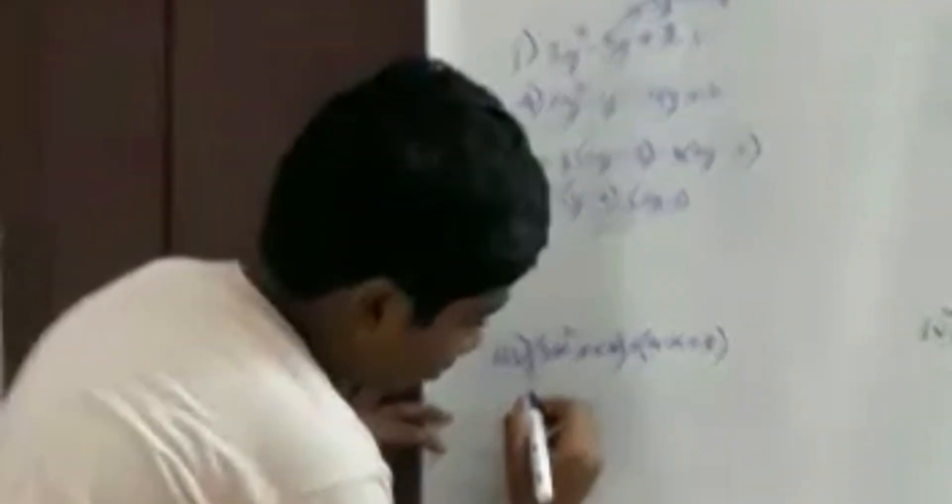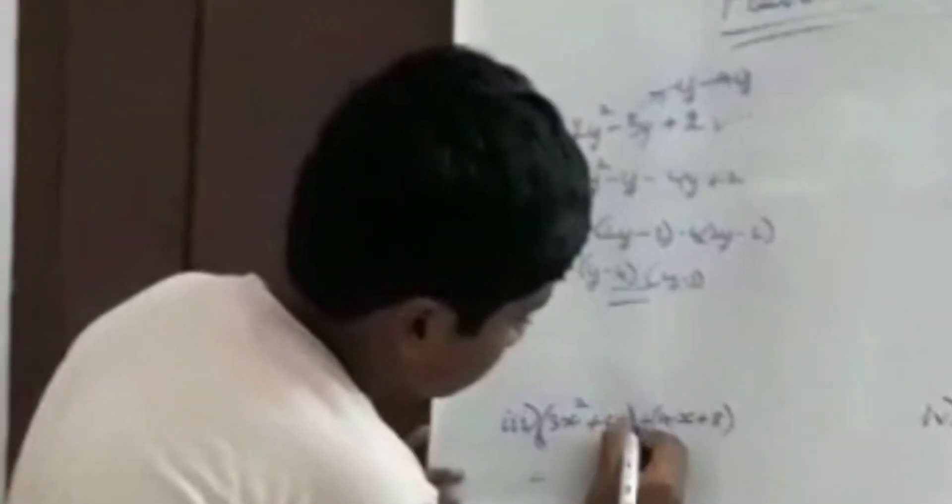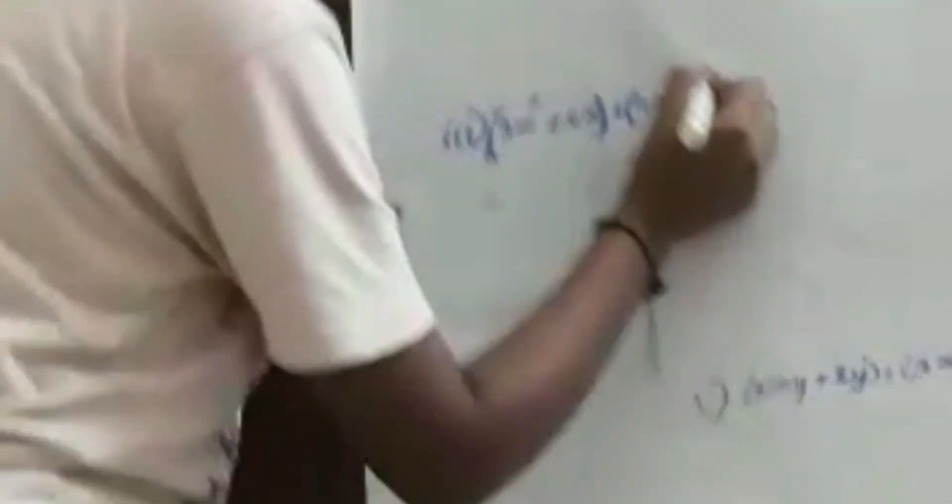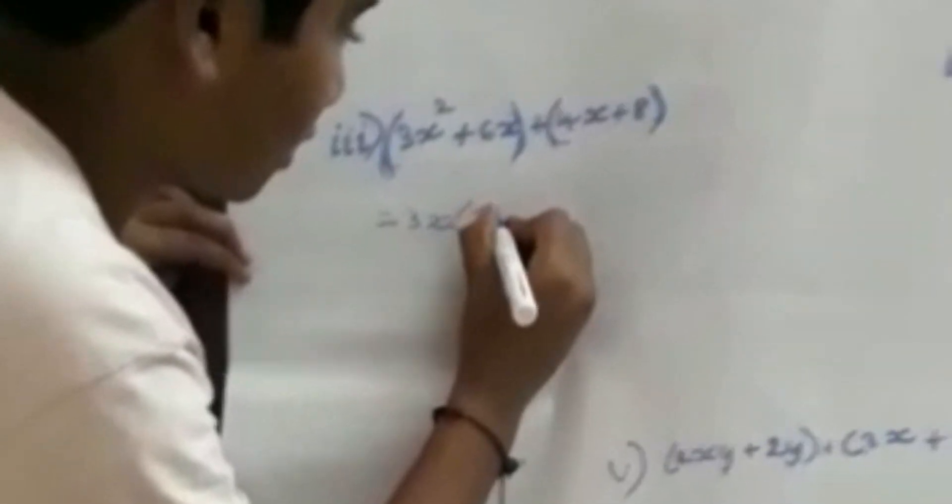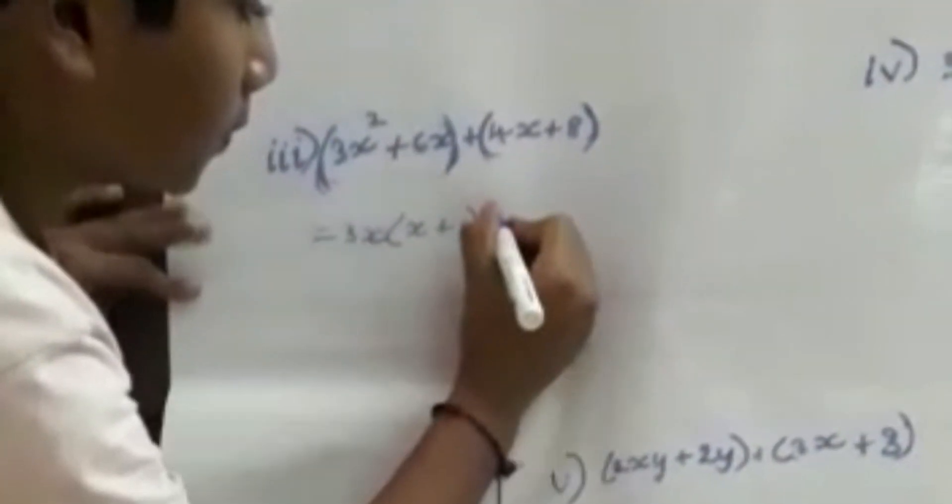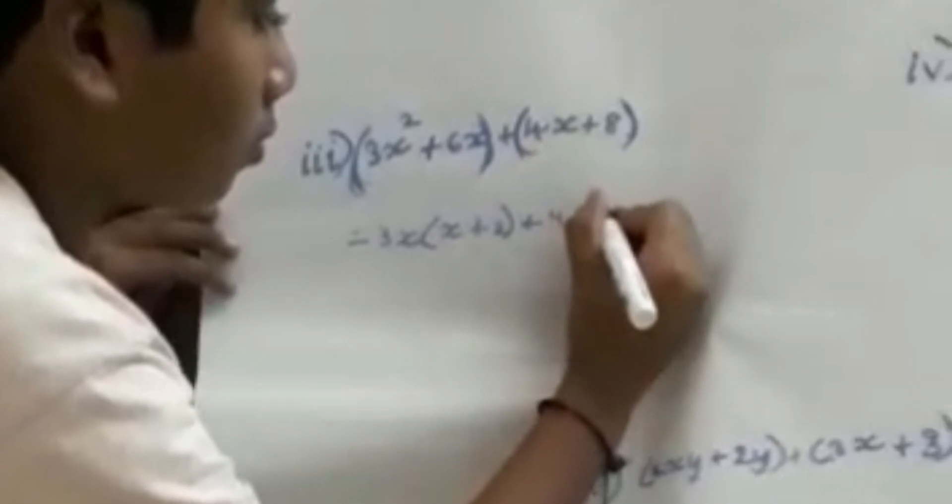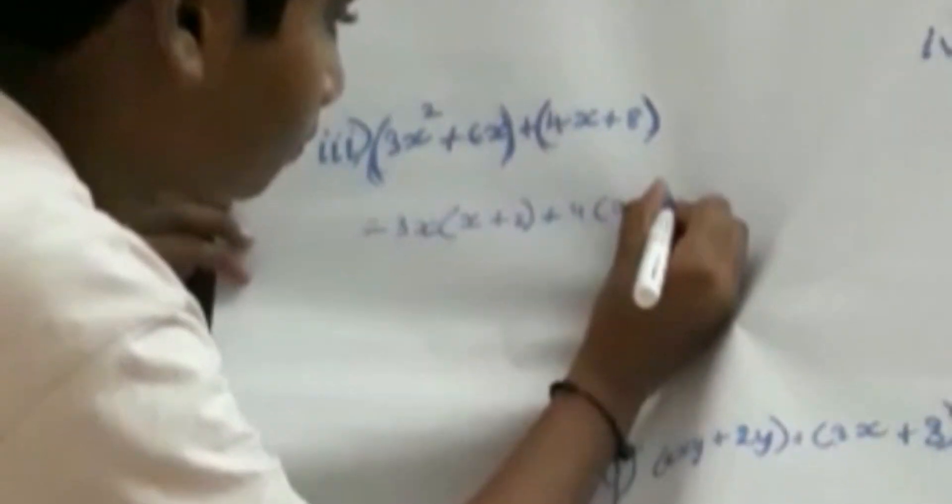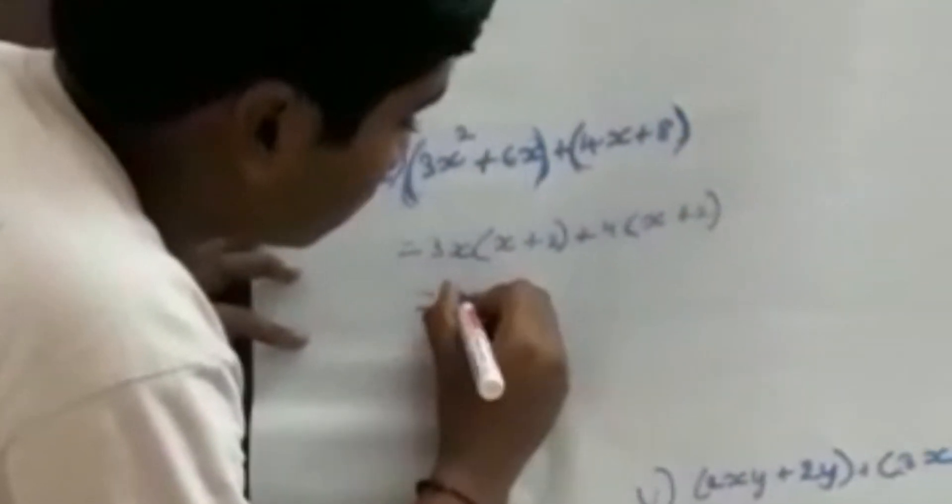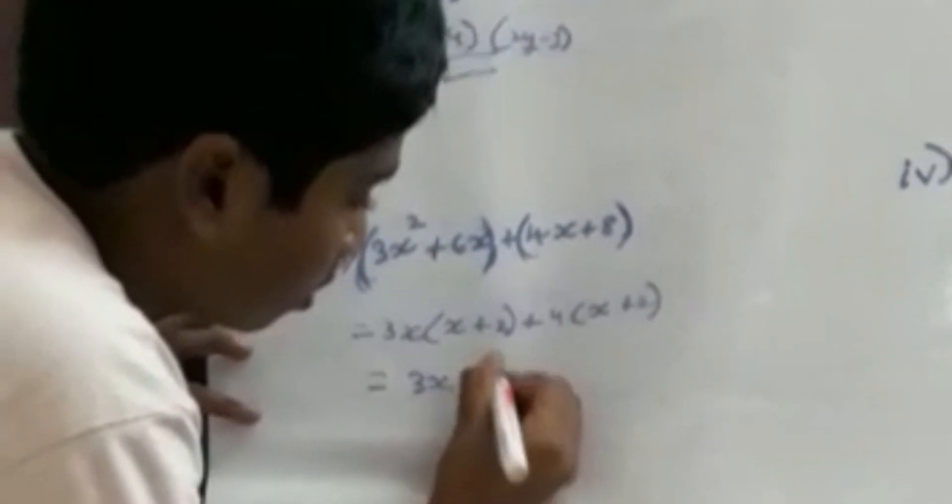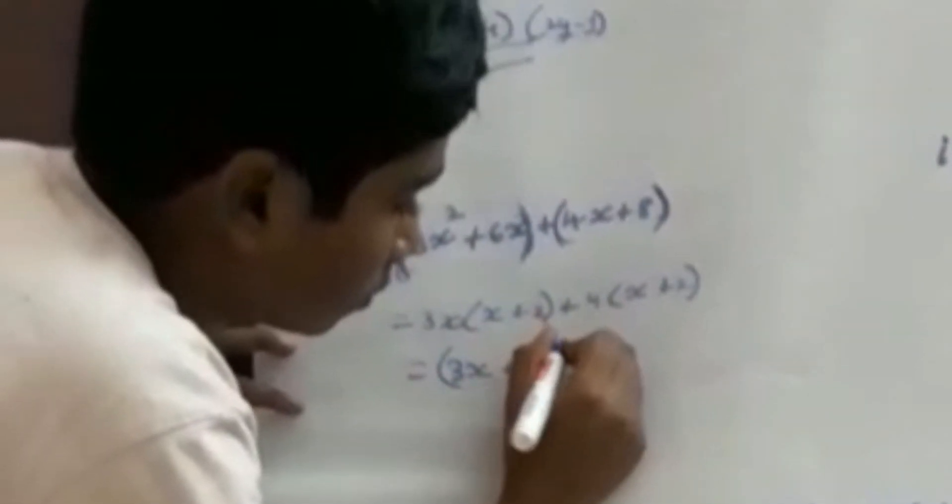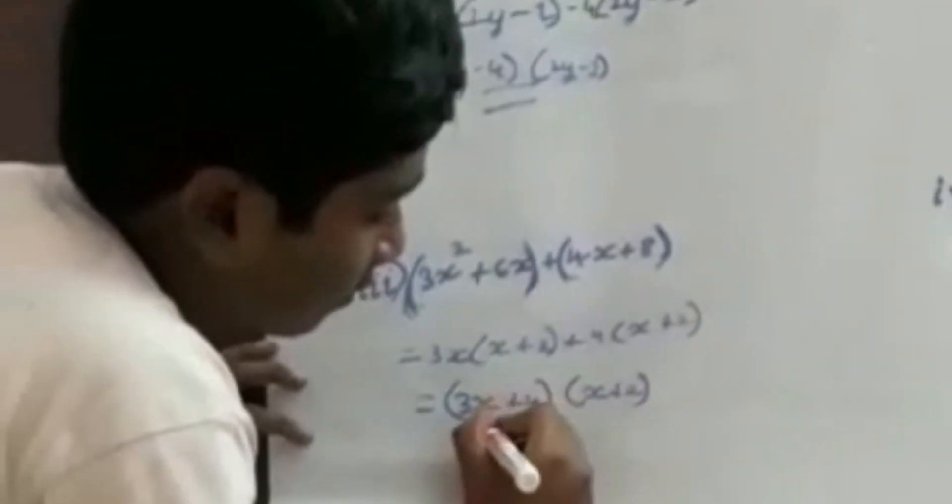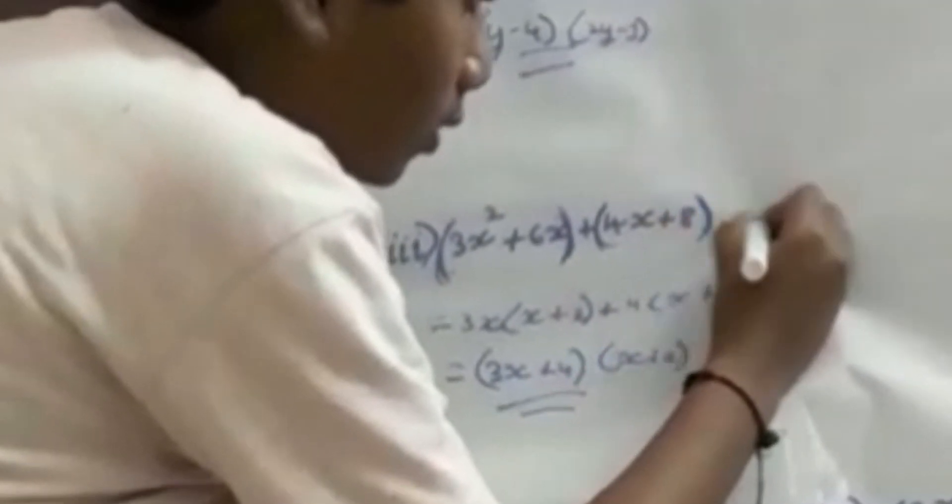I am going towards the third example. Here I take these two terms and these two terms. Here I get the value 3x(x + 2) + 4(x + 2). Here I get the value (3x + 4)(x + 2), which is the factorized form of this equation.